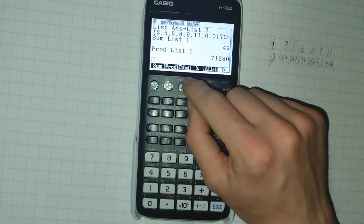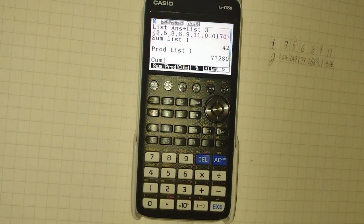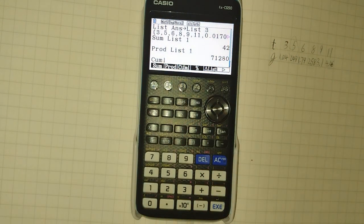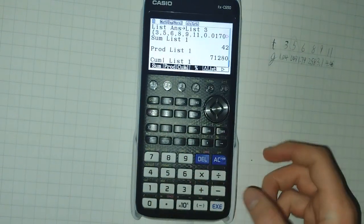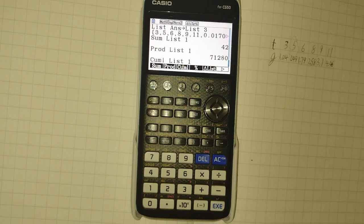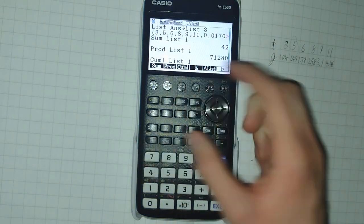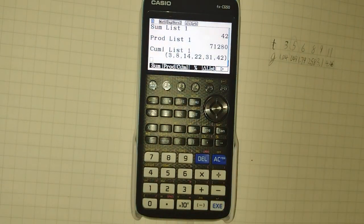Now, you also have cumulative. And this is very helpful. As it calculates the cumulative value of each item in a list. So, this is best understood with an example. Running cumulative of list one returns three, eight, fourteen, twenty-two, thirty-one, forty-two.